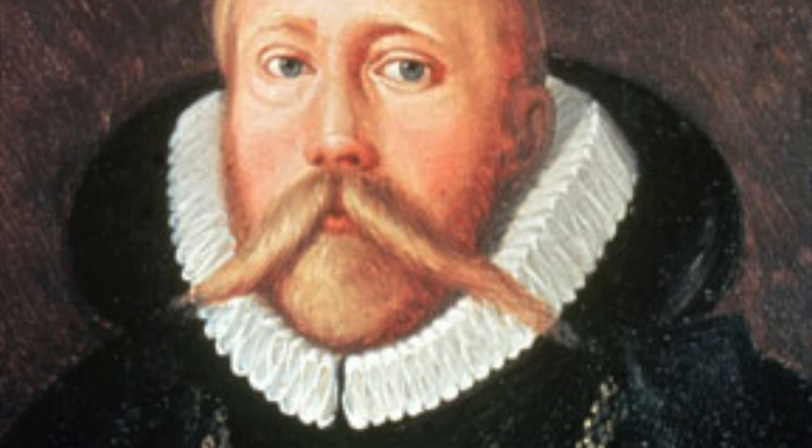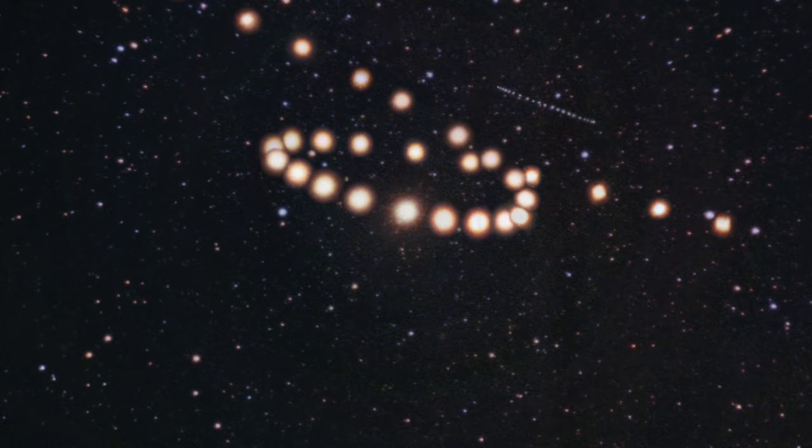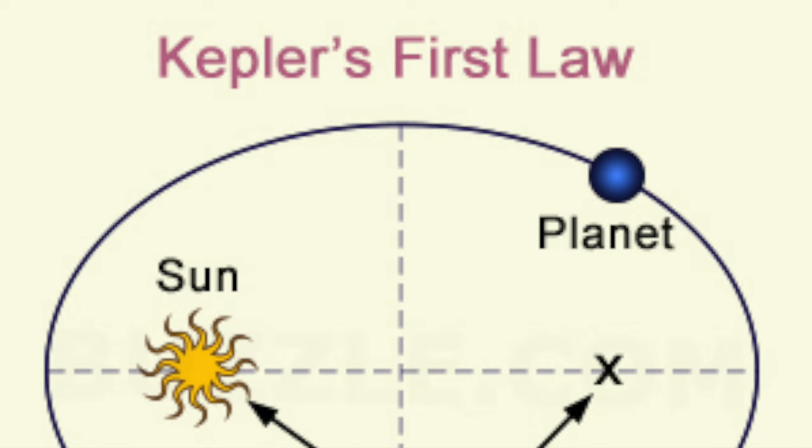Kepler completed the lunar tables upon which Tycho had worked. He selected Mars as one of his test objects because he wanted to find the relationship between various objects in the solar system. After nine years of work he published his results, finding the first and second laws of planetary motion.